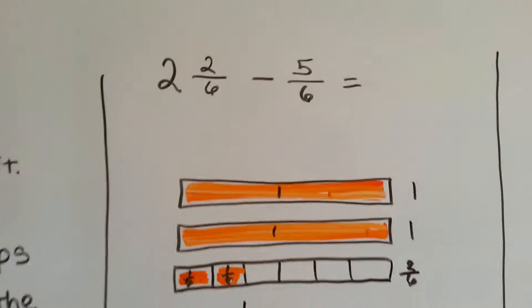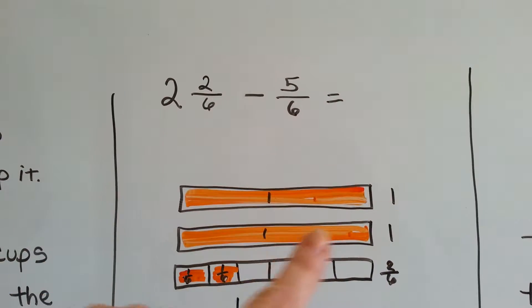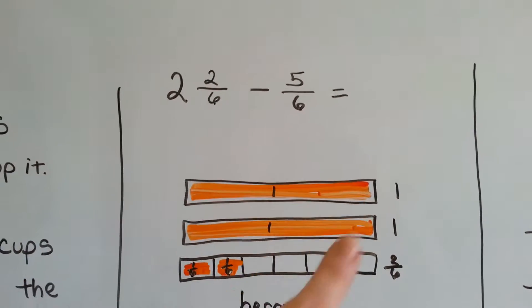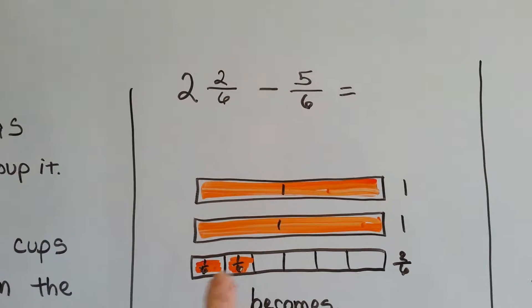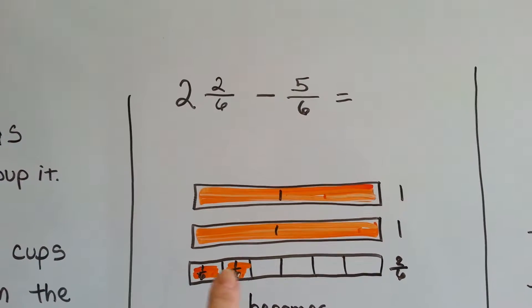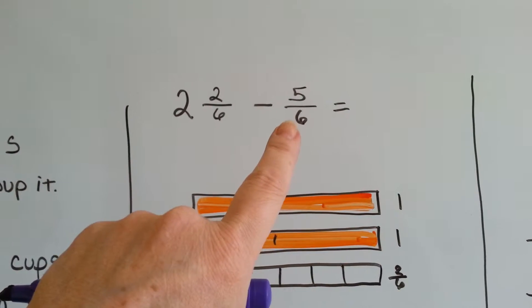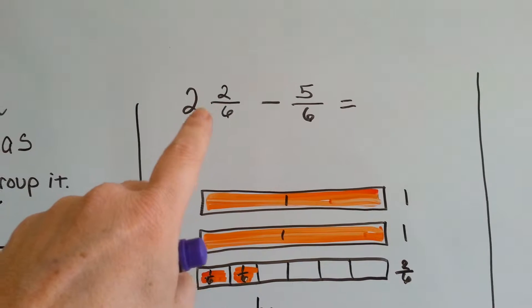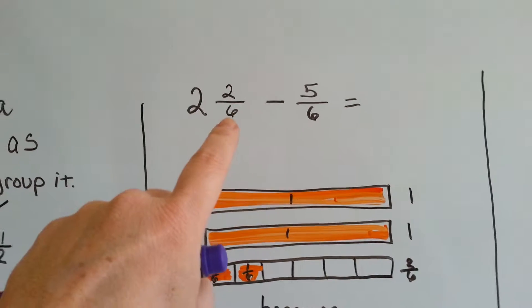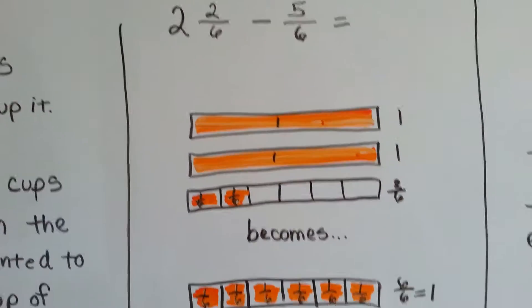Let's see what we've got for subtraction. We've got two and two-sixths. Let's say this was three orange candy bars — you have two whole ones and two-sixths of one left, and you wanted to take away five-sixths more from this amount. We could turn this into all sixths, and then we'd be able to take the five-sixths away.